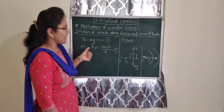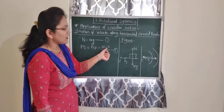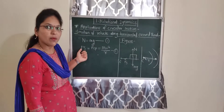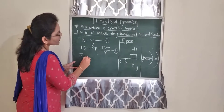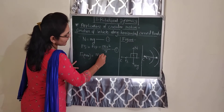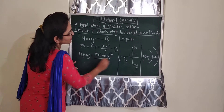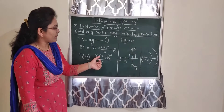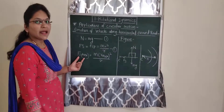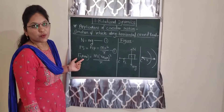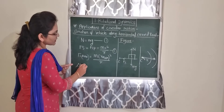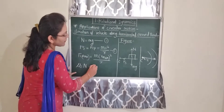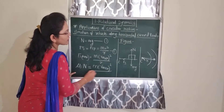If V goes on increasing, then Fs also goes on increasing. If V goes on decreasing, then Fs also goes on decreasing. Suppose V is maximum, then Fs is also maximum. Therefore, Fs_max = M × V_max² / R. The maximum value of frictional force equals μs × N, so Fs_max = μs × M.